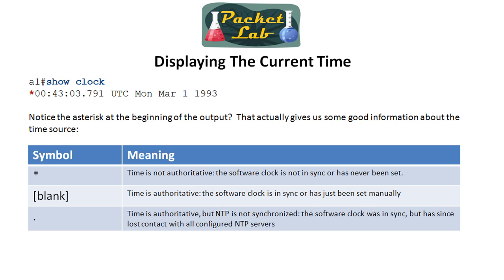As you can see, it's set to March 1st 1993 — which is 'epic time' — meaning the device has no idea what time it is. You may see an asterisk if you're not running NTP. If you are running NTP you might see a period, which is important for troubleshooting because that period means NTP is not synchronized. You'll often see this when NTP was working but suddenly lost communication to the NTP server. Your time can still be relatively accurate since it was previously synced via NTP.